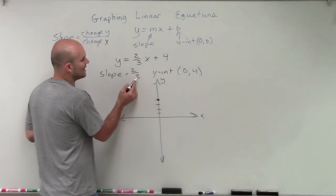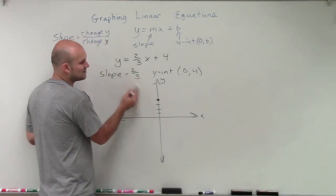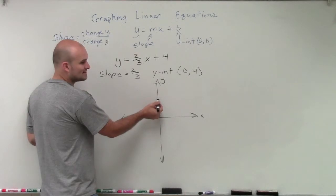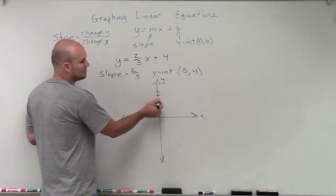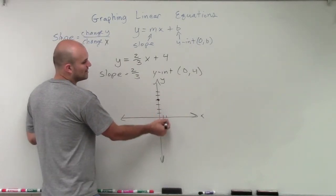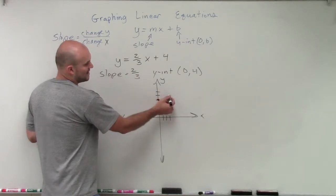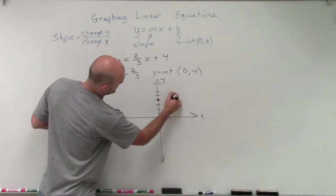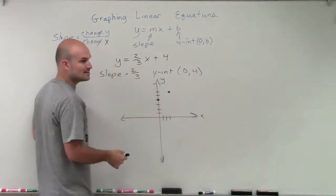So if I know the change in y is 2 and the change of x is 3, from my initial point, I'm just going to go up two units, which would be the change in y, and over three units, which would be the change in x. And that's going to give me my next point.